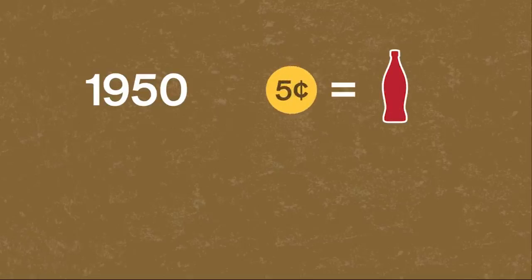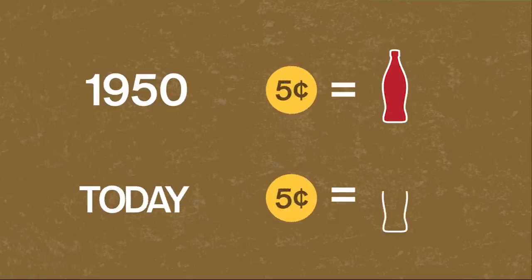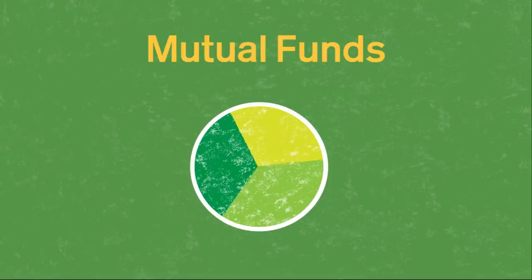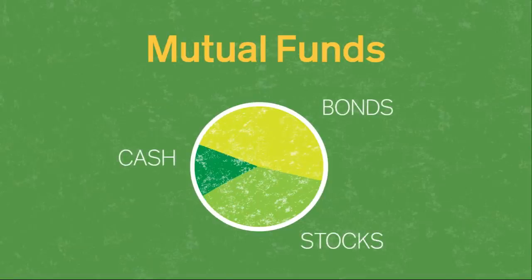For example, in 1950, a nickel would buy you a Coke. But if you saved that nickel until today, you wouldn't have enough to buy that same Coke. Cash loses value over time. Most people with 401k plans invest in mutual funds. These hold many different individual stocks or bonds chosen by professionals for a given level of risk and potential reward.